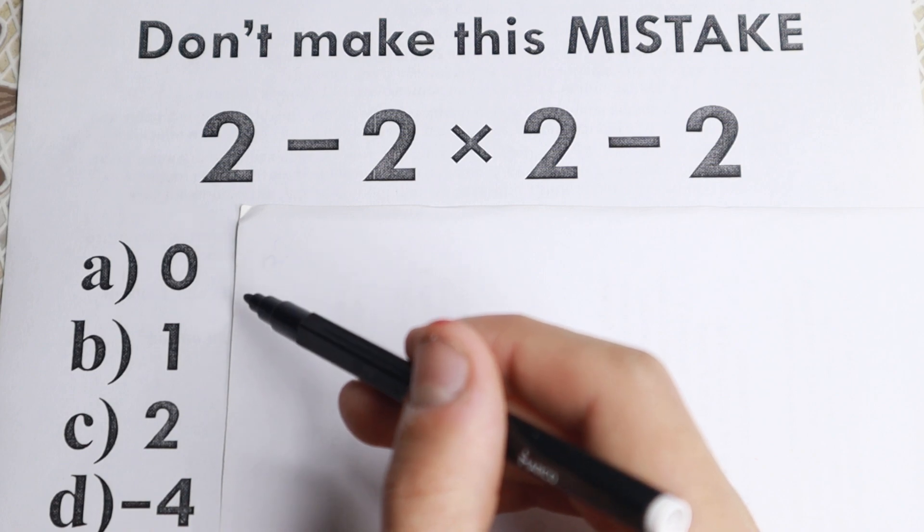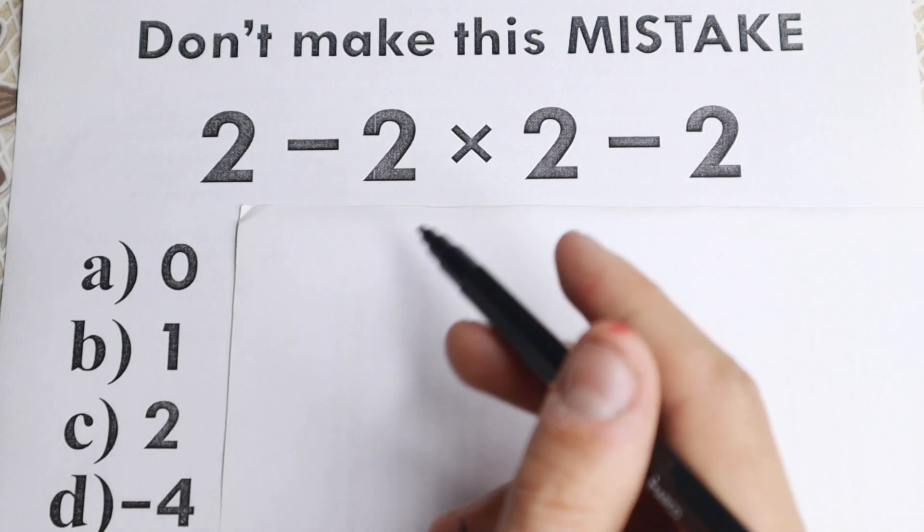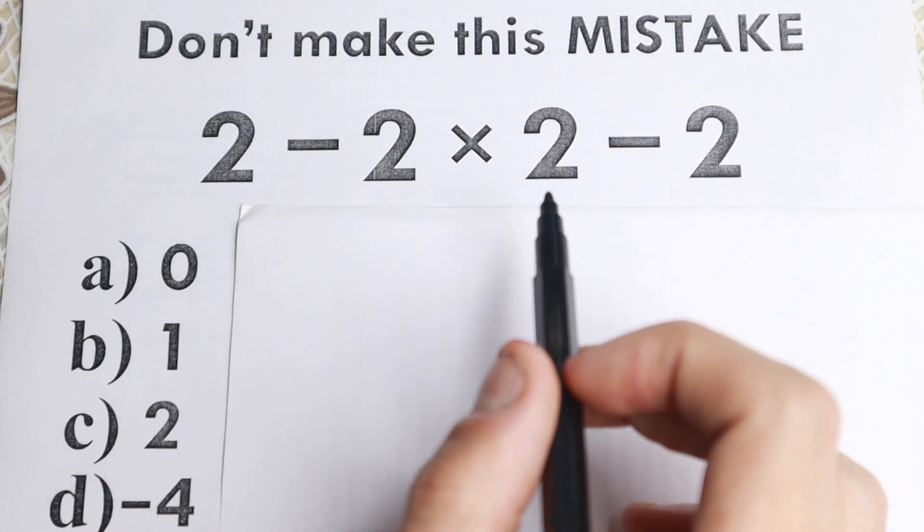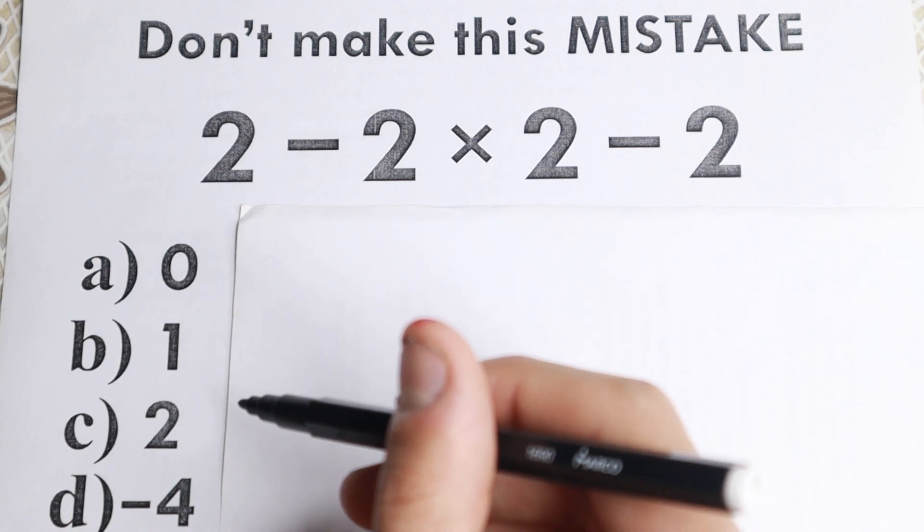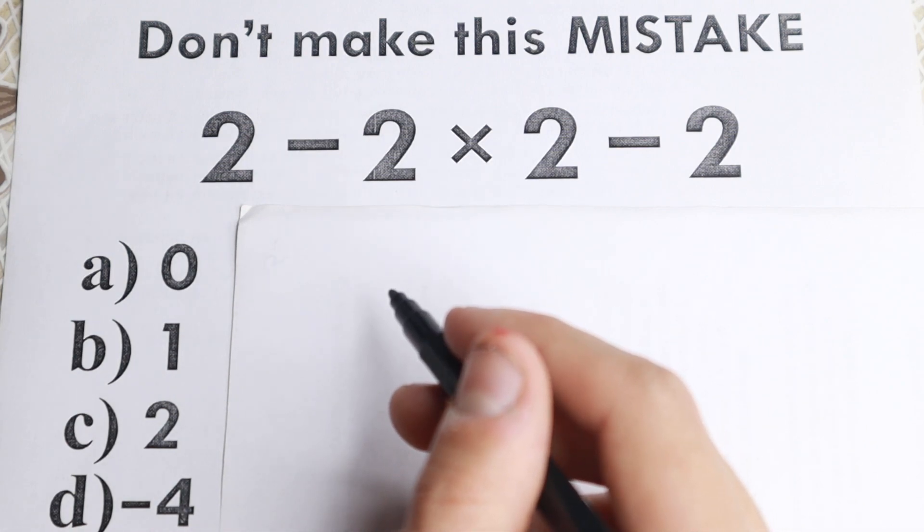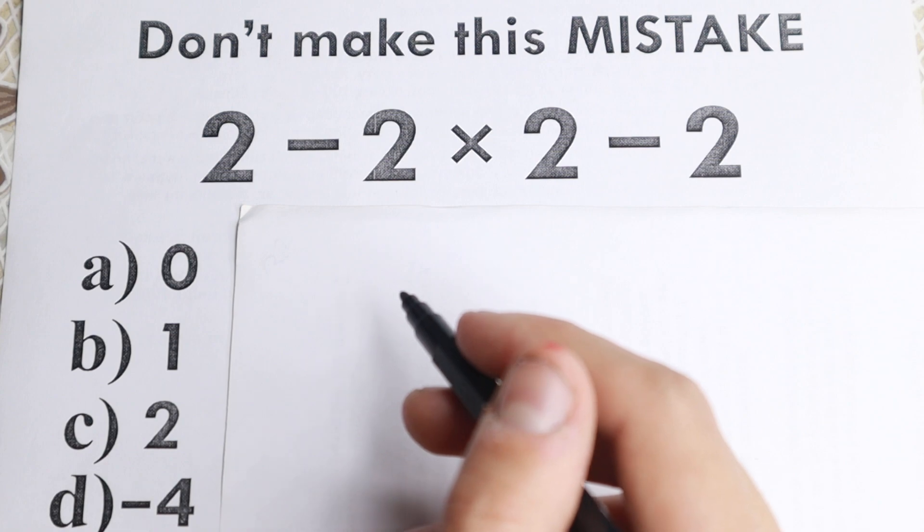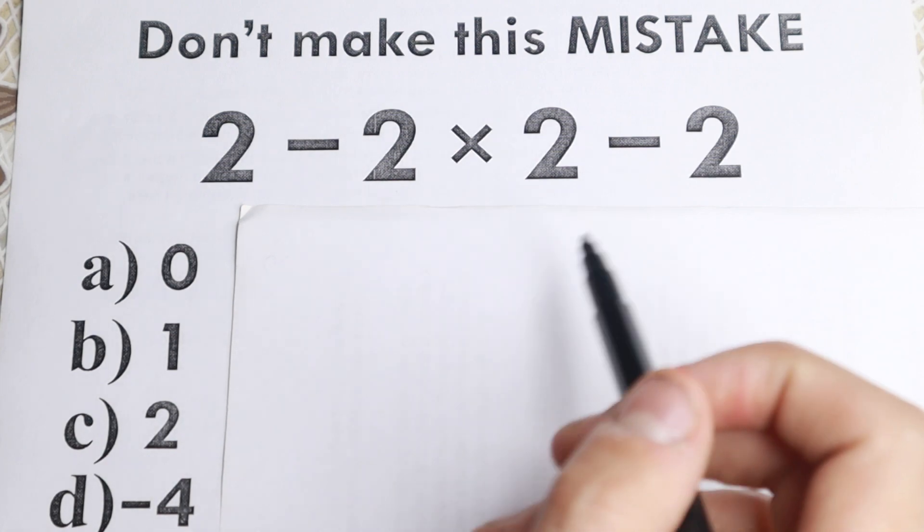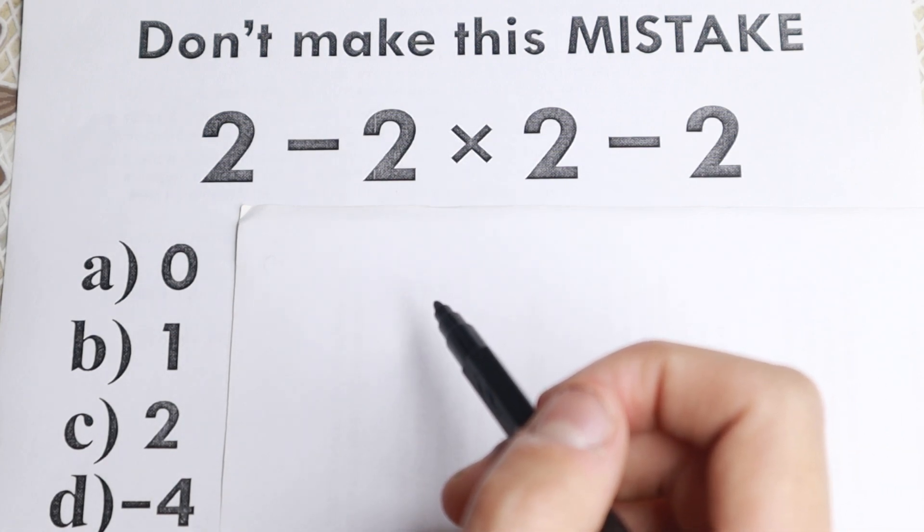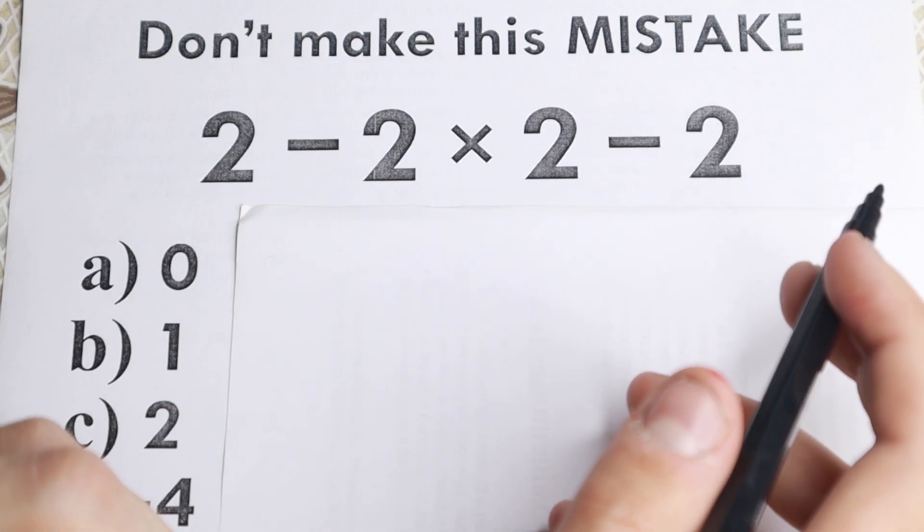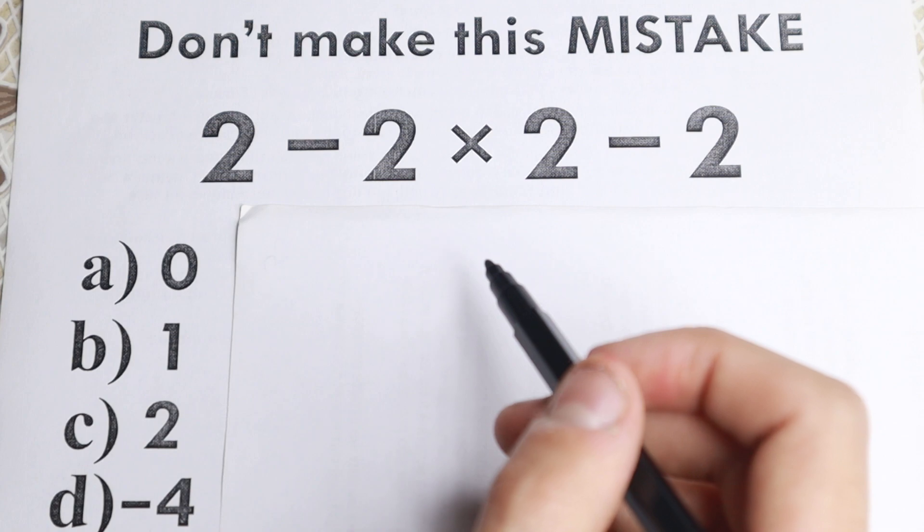We have a lot of options right here on the left hand side. We have 0, 1, 2 and minus 4, and I suggest you to try to solve it by yourself and write your option in the comment. Because obviously whatever order you select is going to create a different answer. So we need to understand what is the correct order of operation in this interesting question.